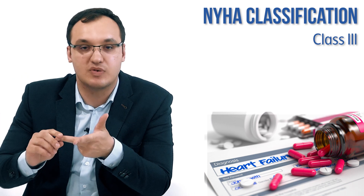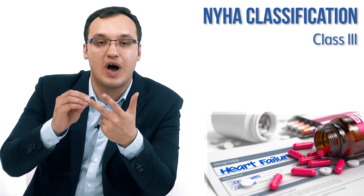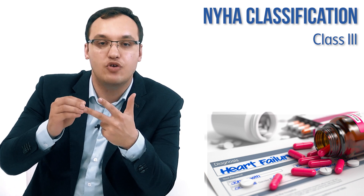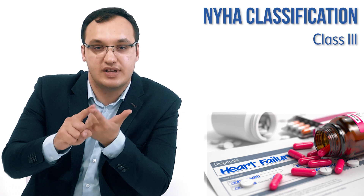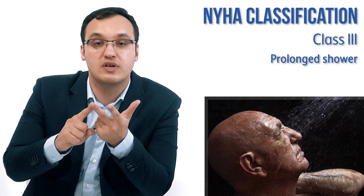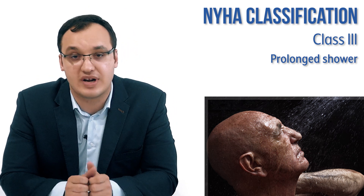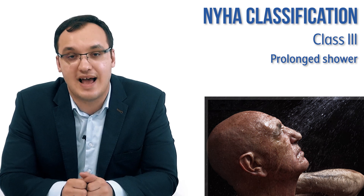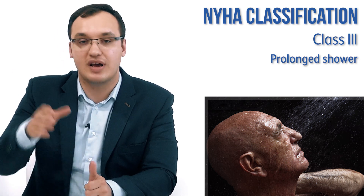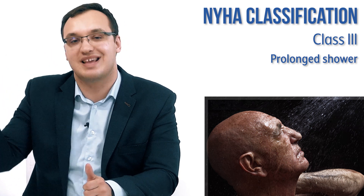For Class 3, I'll mention just one example to help you understand and remember this classification. Class 2 is associated with sexual intercourse; Class 3 is that you can take a prolonged shower — that's about the only thing you can do. You go to the shower, and that's your activity level.